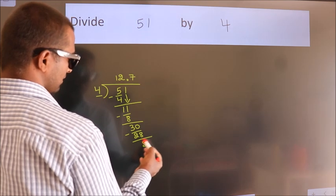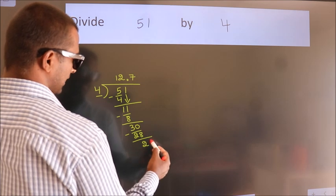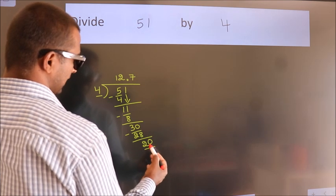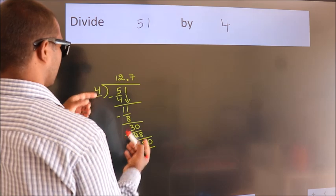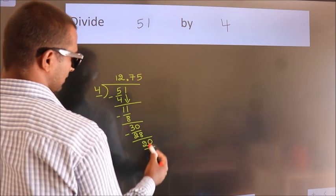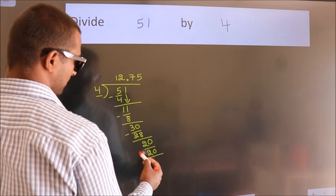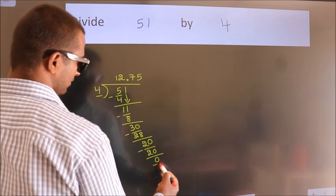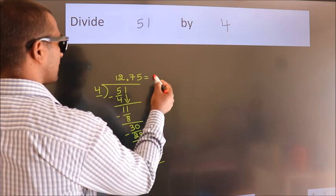After this, we already have the decimal, so directly take 0. So 20. When do we get 20 in the 4 table? 4 fives 20. Now we subtract. We get 0. We got remainder 0, so this is our quotient.